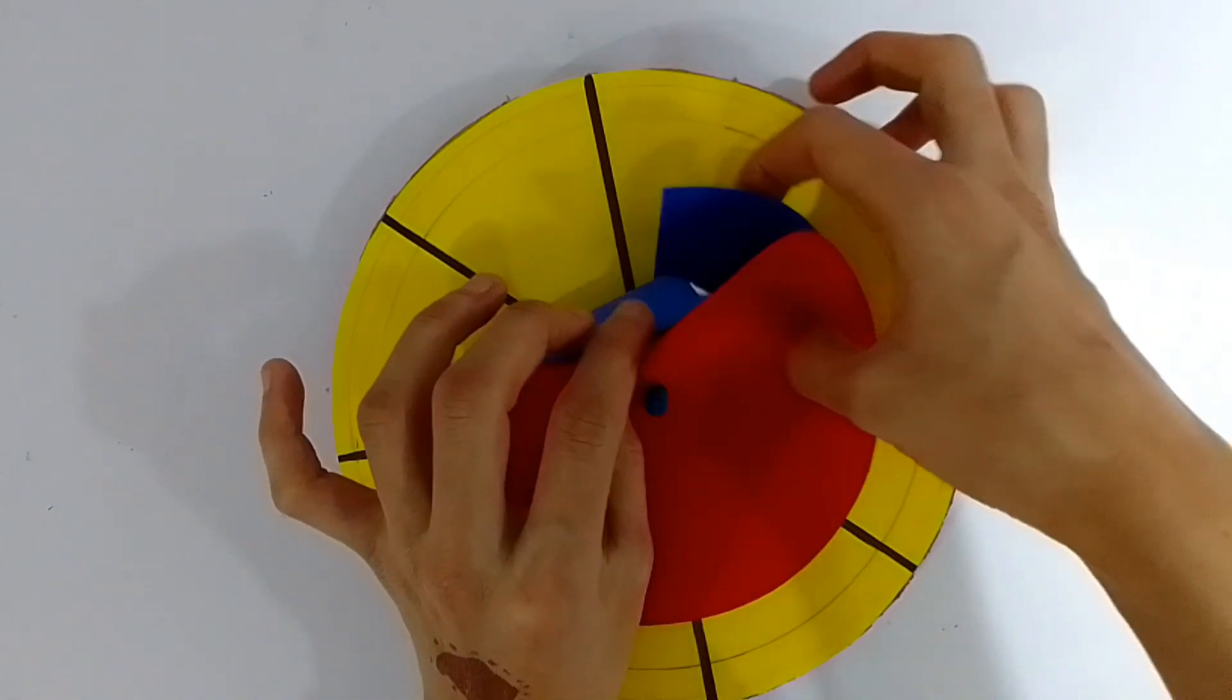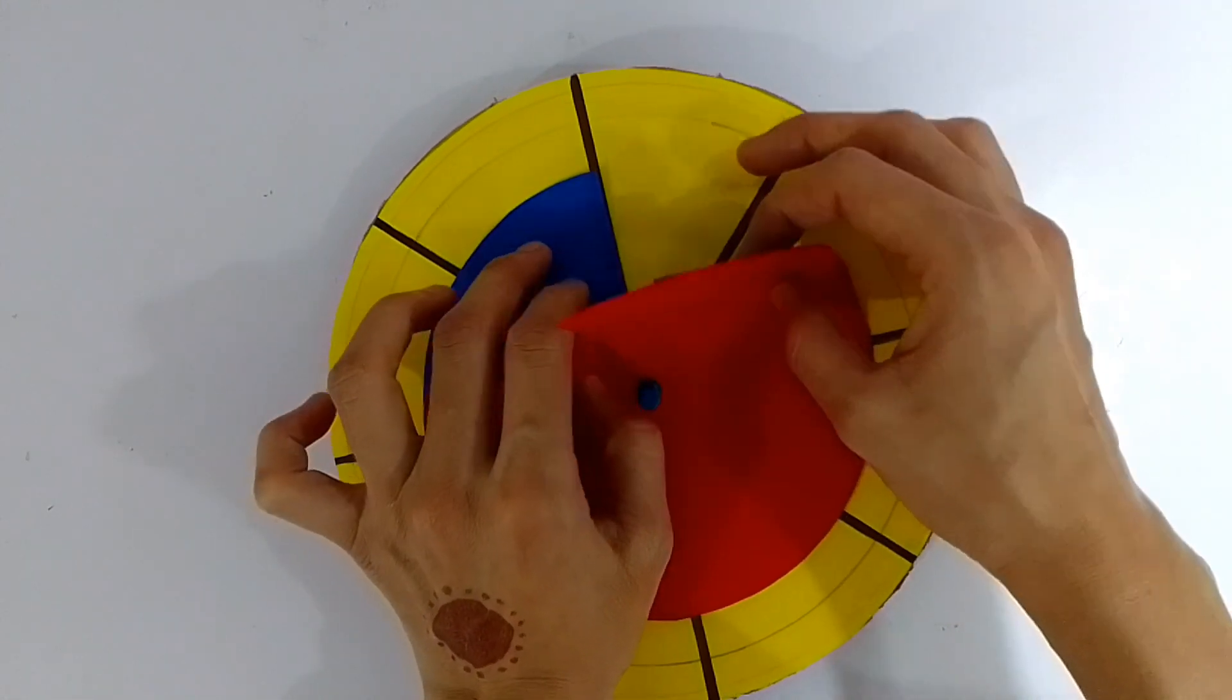Now, apply a little glue on one corner of the blue circle and stick it to the yellow paper.